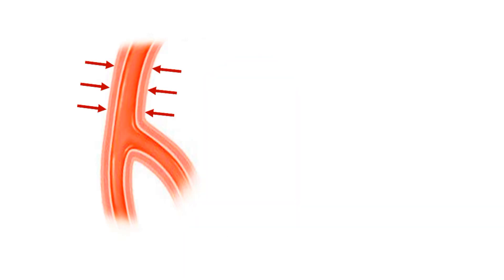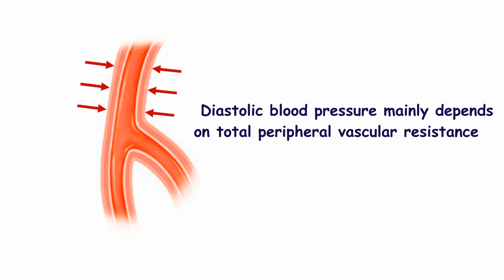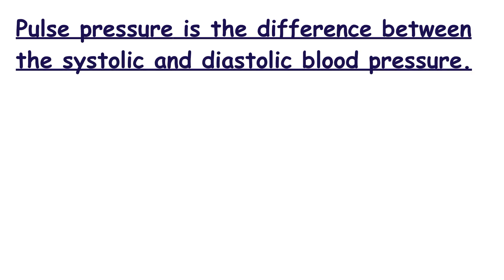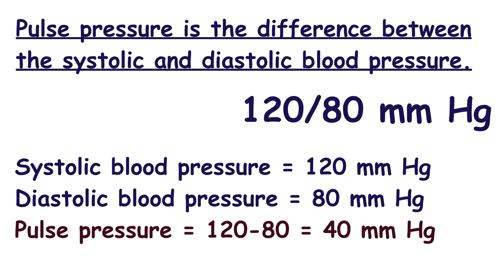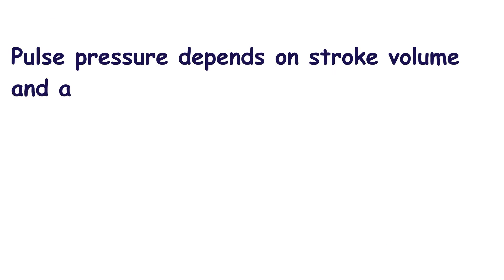The diastolic blood pressure is specifically the minimum arterial pressure during relaxation of the ventricles when the ventricles fill with blood. Diastolic blood pressure mainly depends on total peripheral vascular resistance. The increased vascular resistance is mainly attributable to small arteries and arterioles. The difference between systolic and diastolic blood pressure is called pulse pressure — for example, if blood pressure is 120/80 mmHg, then the pulse pressure is 40 mmHg.